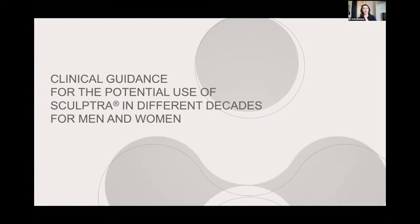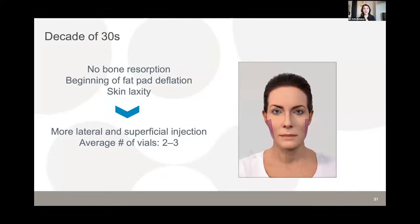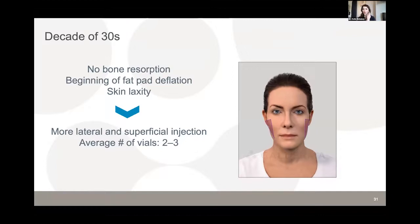Injection approach varies by decade. In patients in their 30s, there is no significant bone resorption but beginning fat pad deflation and mild skin laxity. Sculptra can provide collagen stimulation and prevention. The approach favors more lateral injections for lift, with more superficial injections in the immediate subdermal plane for fine lines, wrinkles, and laxity. Average number of vials for this age group is two to three.